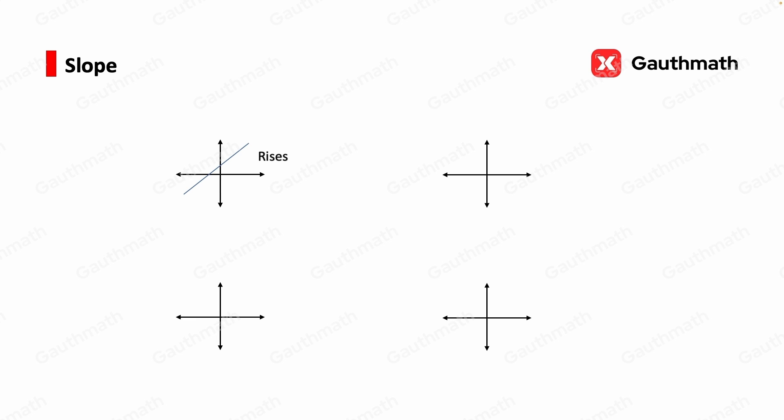So when we have a line from left to right rises, the slope is positive. If a line from left to right falls, then the slope is negative. Horizontal lines, the slope is 0, and vertical lines, the slope is undefined.